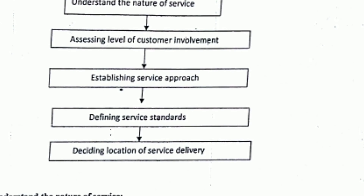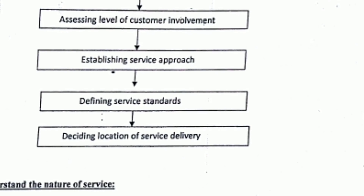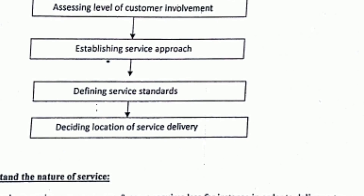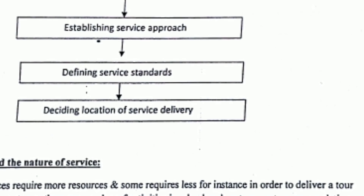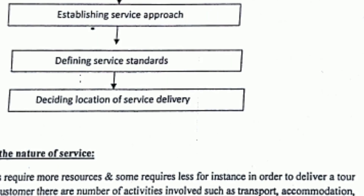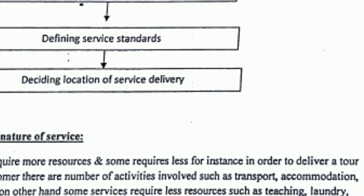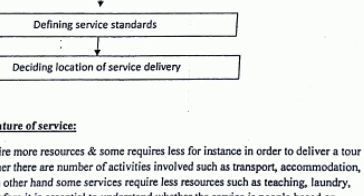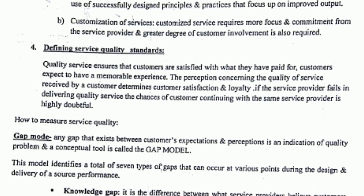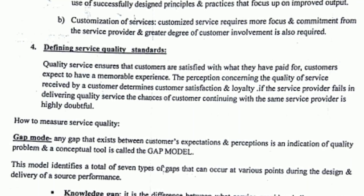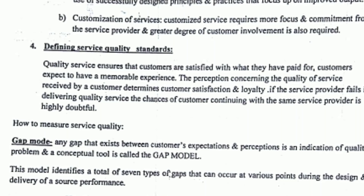Bank ownership — banks were given some ownership freedom so that they could be accountable and could not disclaim responsibility. Banks gained freedom of ownership and could be owned by private or public entities. Review of banking laws — many changes were made to banking laws, including rules, regulations, and procedures. Overall, Narasimha Committee 2 brought significant reforms to the banking sector.